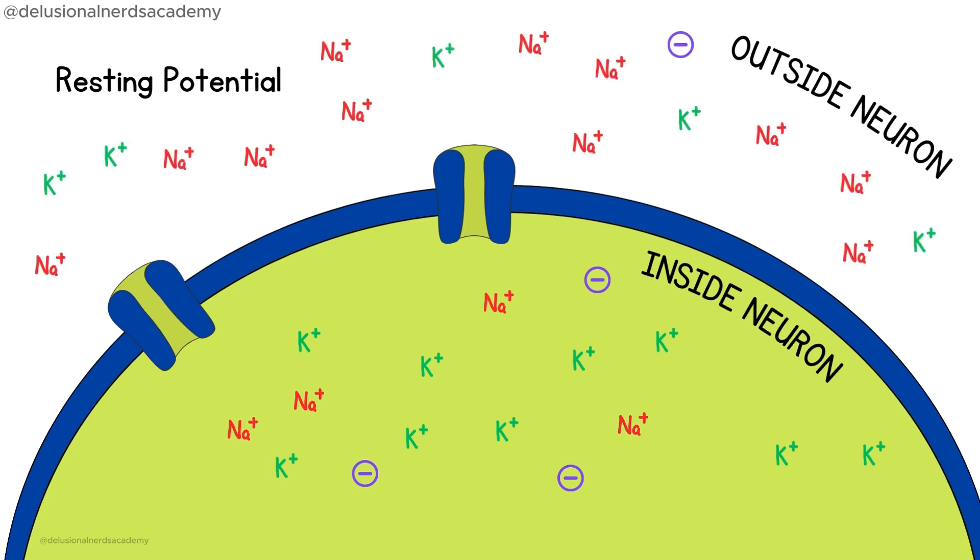This is possible because the cell has a special mechanism called a sodium-potassium pump. The pump uses energy to move ions in and out of the cell. It pumps three sodium ions out of the neuron and two potassium ions into the neuron. Because more positive ions are pumped out than brought in, the inside of the neuron becomes negatively charged compared to the outside.